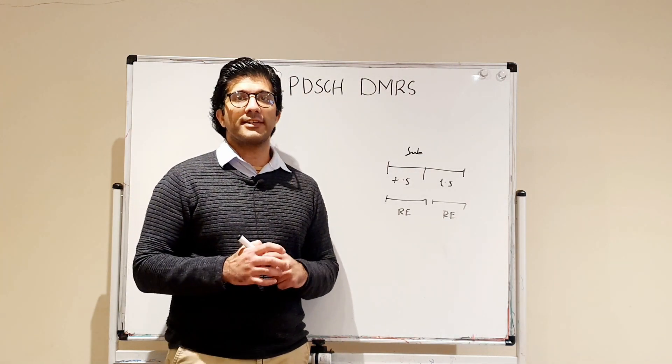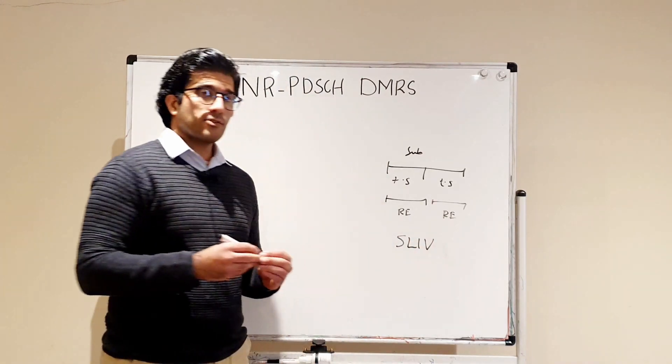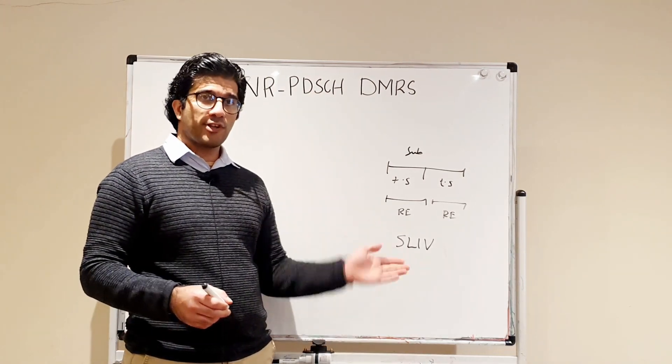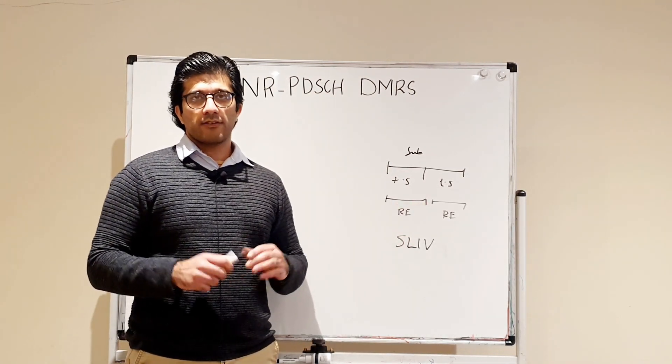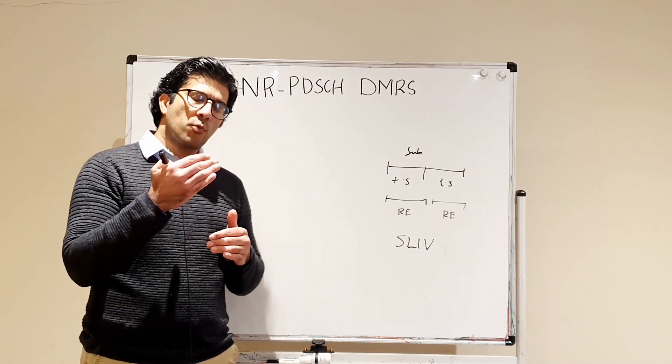How will the user know which time slot and how many time slots the user has been allocated? That is from a thing called SLIV, the start and length indicator, which is communicated to your UE. By this number, the UE will know which time slot and how many time slots the user needs to hear.